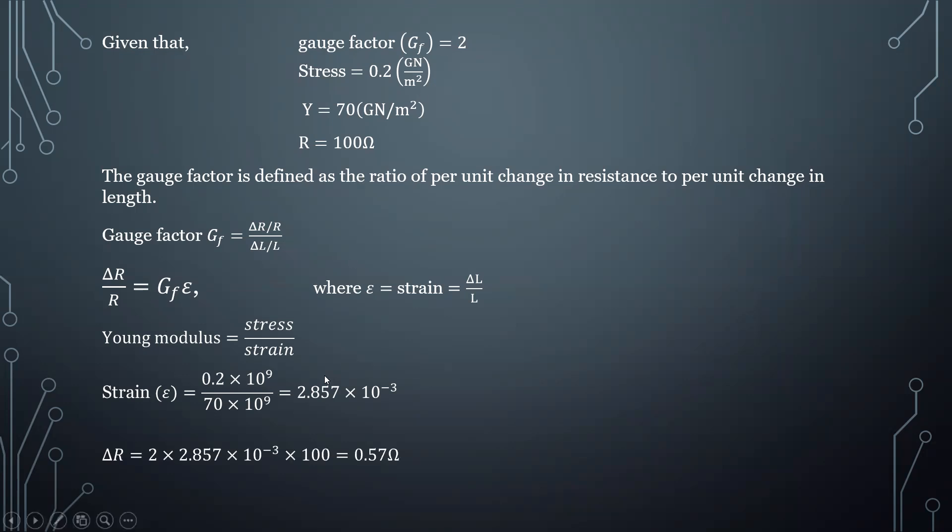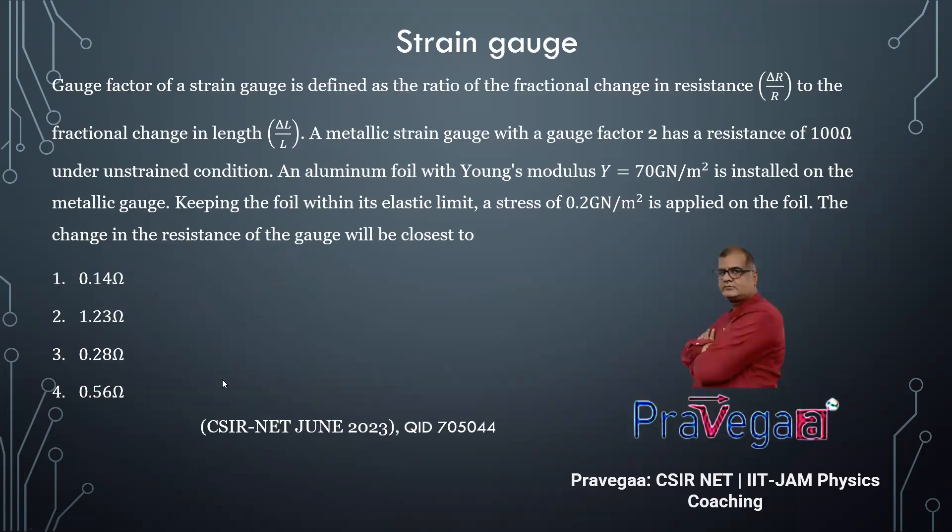The resistance value is given, so you can get the value of change in the resistance. So change in the resistance is 0.57 ohm, and this is given as option 4 in the question. So option 4 is the correct answer. Thank you very much.